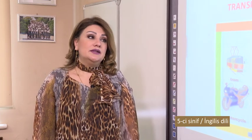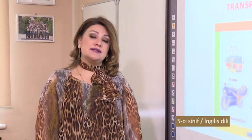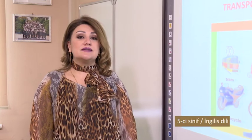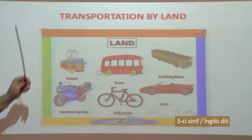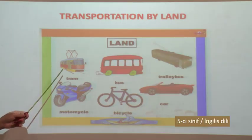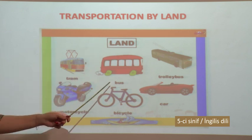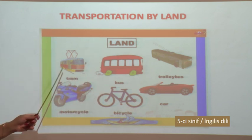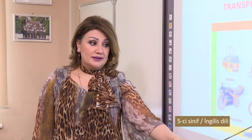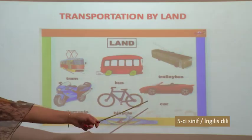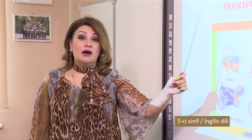Now, transportation by land. Let's recognize, let's get acquainted with these means of transport. Transportation by land: tram, bus - as you see here we have land transport: bus, tram, trolleys, motorcycle, bicycle, car. These are transportation by land.